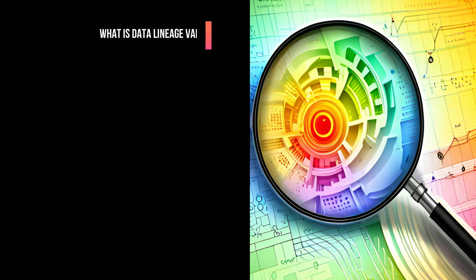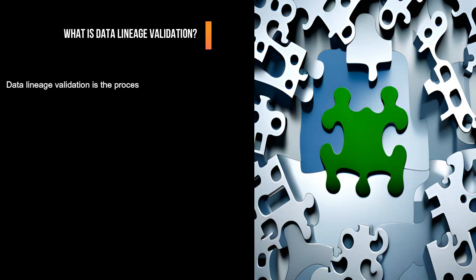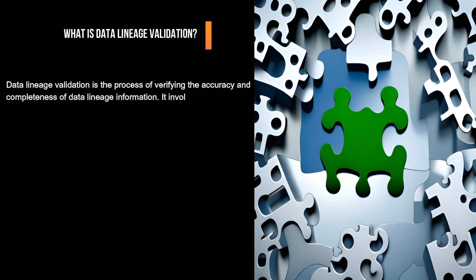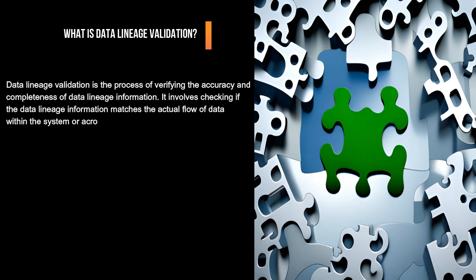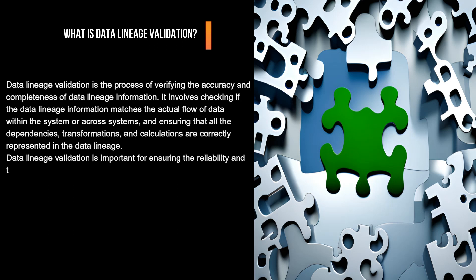What is Data Lineage Validation? Data Lineage Validation is the process of verifying the accuracy and completeness of data lineage information. It involves checking if the data lineage information matches the actual flow of data within the system or across systems and ensuring that all the dependencies, transformations, and calculations are correctly represented in the data lineage.